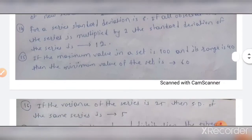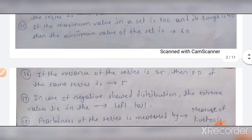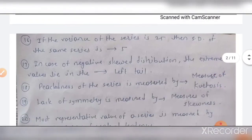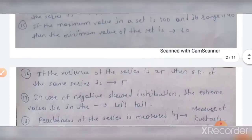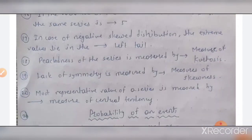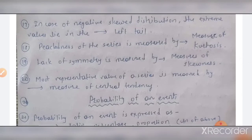The fourteenth MCQ: for a series where standard deviation is 6, if all observations are multiplied by 2, the standard deviation of the new series will be 12. The fifteenth MCQ: if the maximum value in a set is 100 and its range is 14, then the minimum value is 86 — wait, corrected: minimum value is 86. The sixteenth MCQ: if the variance of a series is 25, then the standard deviation is 5. The seventeenth MCQ: in a negatively skewed distribution, the extreme values lie in the left tail.